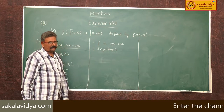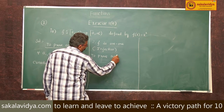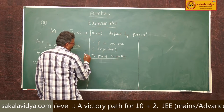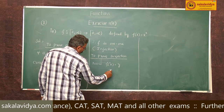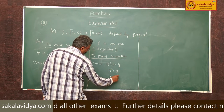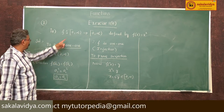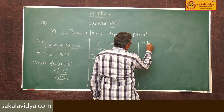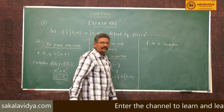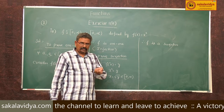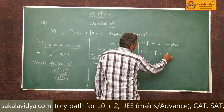To prove surjection: f(x) = y means x² = y, so x = √y, which belongs to [0, ∞). Therefore f is a surjection. Since f is both 1-to-1 and surjection, hence f is a bijection.